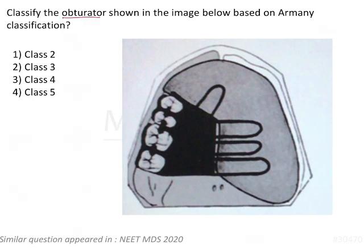Classify the obturator shown in the image below based on Aramani classification. An obturator, as we know, is a prosthesis for maxillary defects.